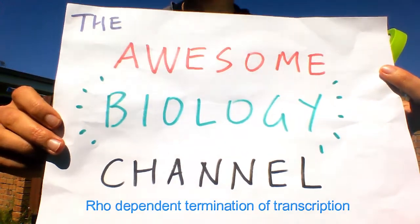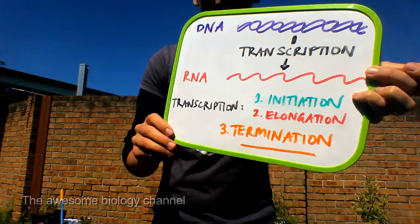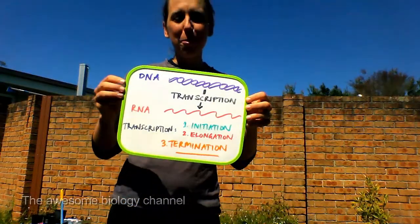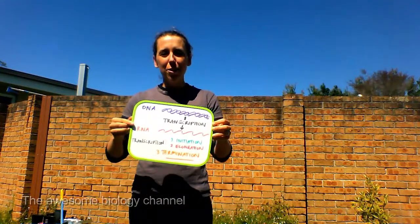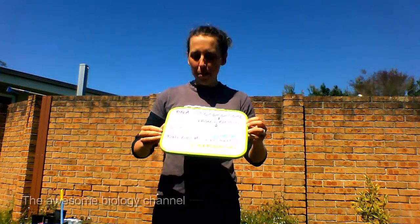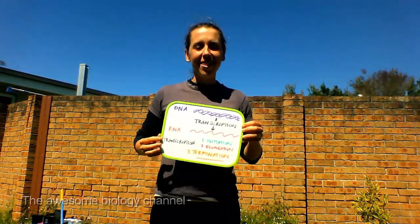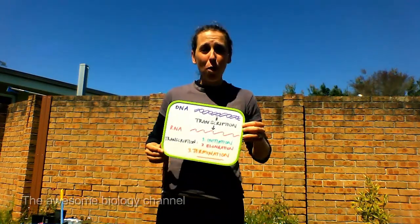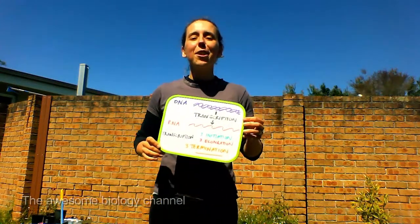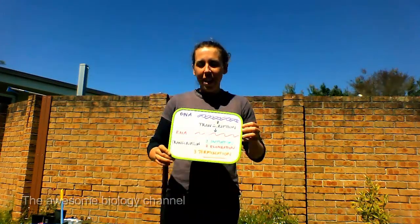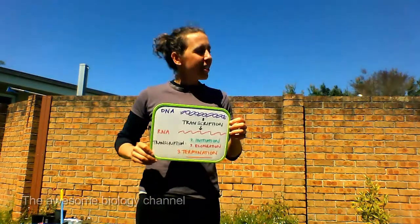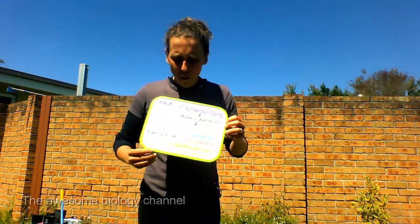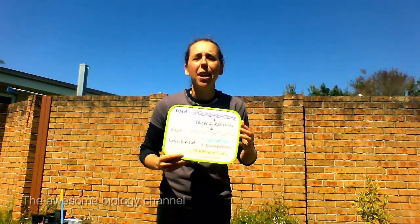Hello everyone and welcome to the Awesome Biology Channel where today I'm going to be talking about the process of transcription, where we can use a DNA template to get out an RNA transcript. Transcription happens in three general phases: initiation, elongation, and termination. For an overview of all these phases please check out my video called prokaryotic transcription. For now, I'm going to get my skateboard and a remote control car and act out one of the processes of termination in prokaryotes.